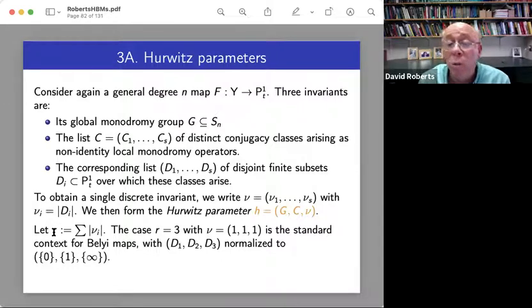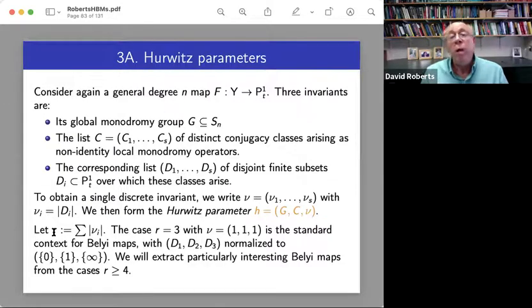And what I'm going to do in this section 3 is extract particularly interesting Belyi maps from the cases R greater than or equal to 4. So all this is connected up with Hurwitz maps or Hurwitz covers. So an R point Hurwitz parameter determines a cover of R dimensional complex varieties.